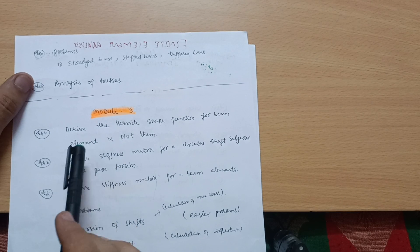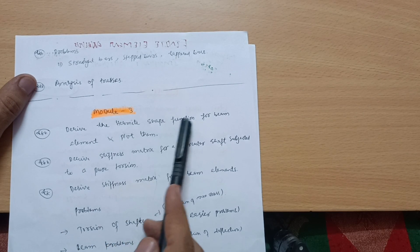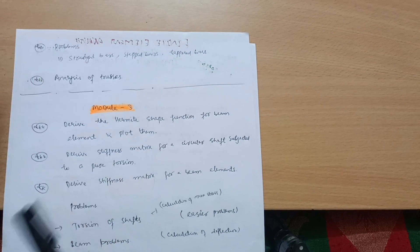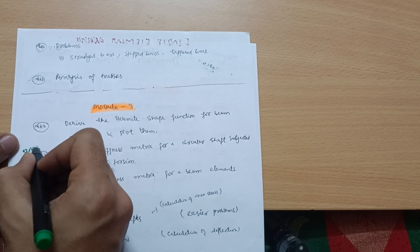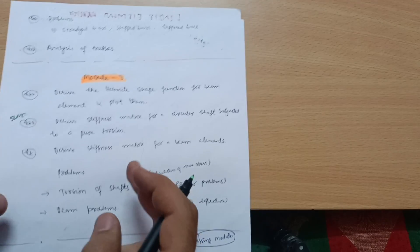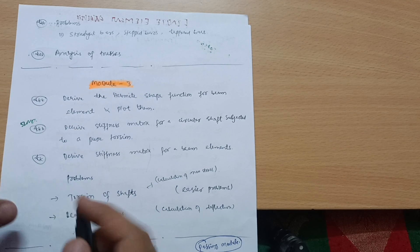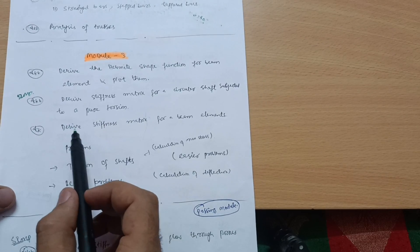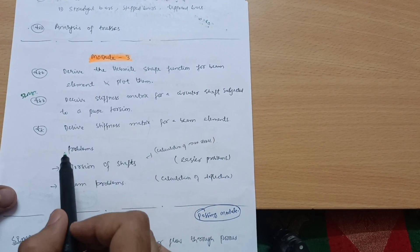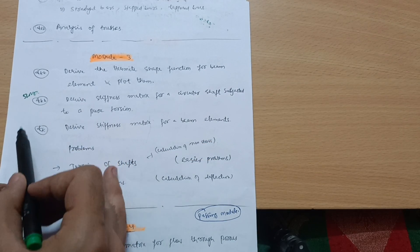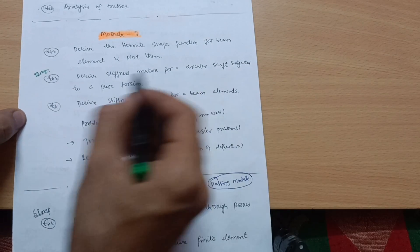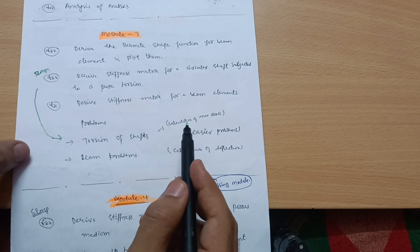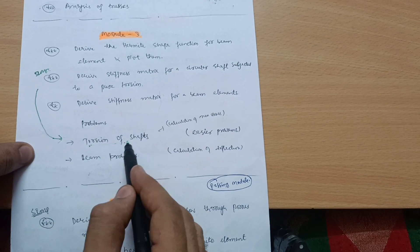Module 3 has one definite question: derive the Hermite shape function for beam element and plot them. Next: derive stiffness matrix for a circular shaft subjected to pure torsion — this is a super important question. These will appear in separate parts as there are two chapters in this module. If you are covering the torsion derivation, definitely go for torsion of shaft problems — it is a very easy one where you calculate the maximum stress.